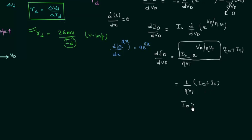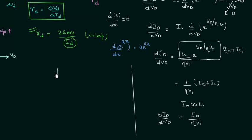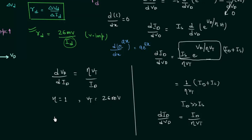Since Id is much greater than Is, we can neglect Is, giving dId/dVd equals Id divided by ηVt. Flipping both sides, dVd/dId equals ηVt by Id. With eta equal to 1 and Vt equal to 26 millivolts, we have dVd/dId equals 26mV by Id, which is the AC resistance Rd. So we have derived Rd equals 26mV divided by Id.